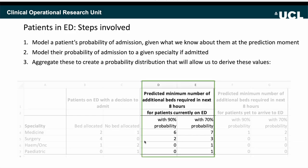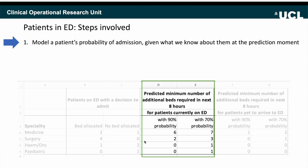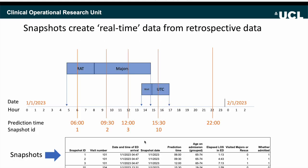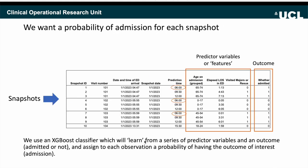Let's start with the model for patients in the emergency department. There are essentially three steps: first, model each patient's probability of admission given what we know about them at the point in time when we observe them; second, if they're admitted, what is their probability of admission to any given specialty; and third, aggregate these to create a probability distribution that gives us the numbers in the spreadsheet. For step one, we want a probability of admission for each snapshot and we use an XGBoost machine learning classifier, which learns from predictor variables and a label, and assigns each snapshot a probability that the visit results in admission.